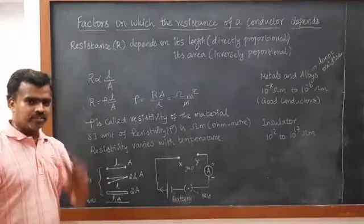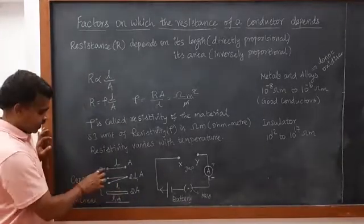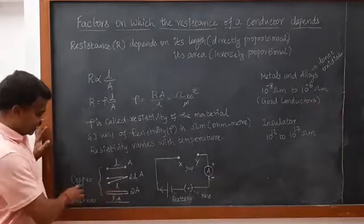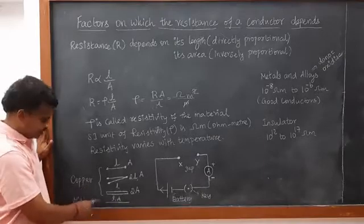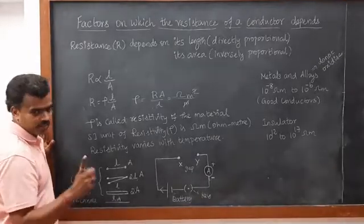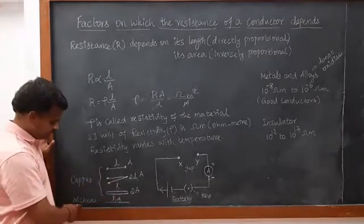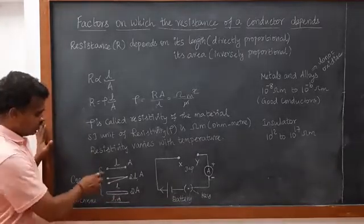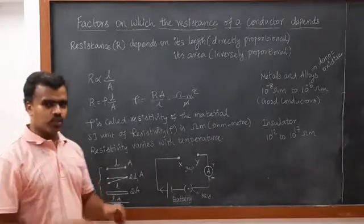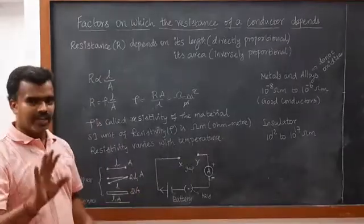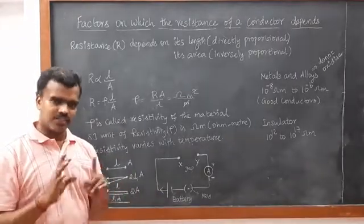We will consider four different cases. The first three use copper wire and the fourth uses nichrome wire. In the first case, the wire has length L and area of cross-section A — specifically 1 meter length and 1 meter squared area. We close the key and note down the current reading.